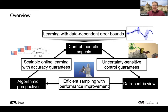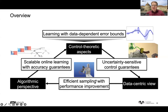In summary, the talk covered GP models and regression error bounds, Lyapunov stability theory extended to uncertainty-aware control guarantees, event-triggered sampling schemes for performance improvement guarantees, and the scalable logGP method for real-world deployment. Thank you for your attention, and feel free to ask further questions.